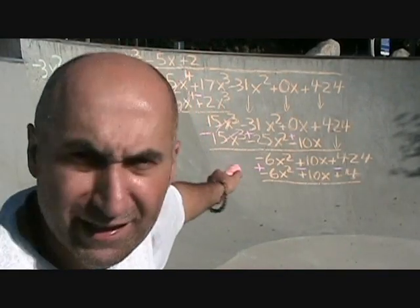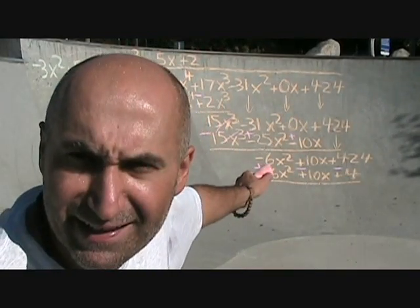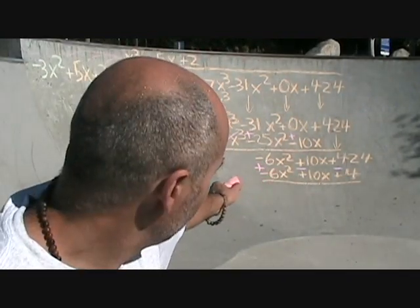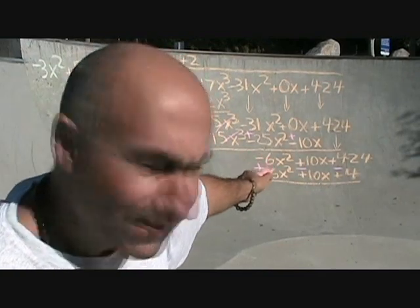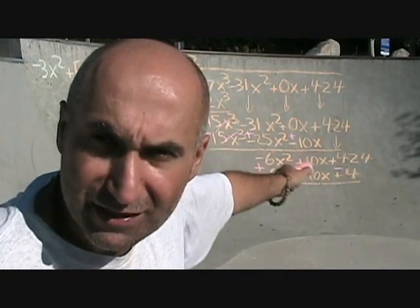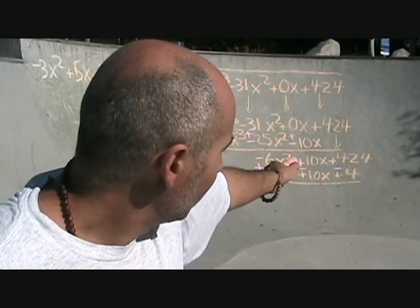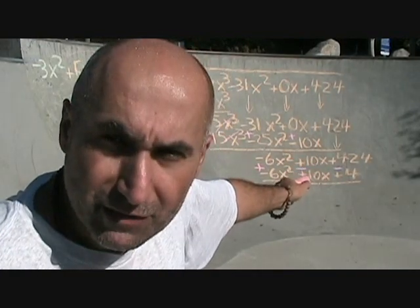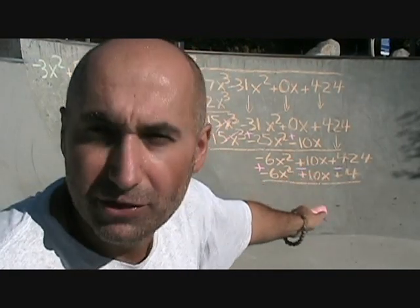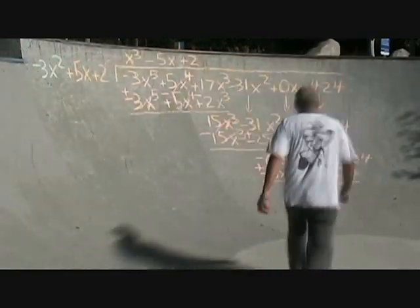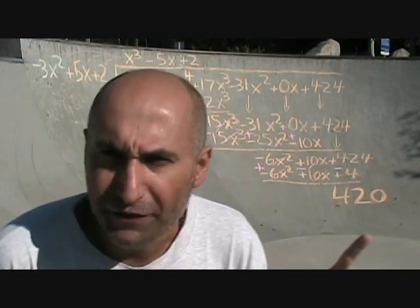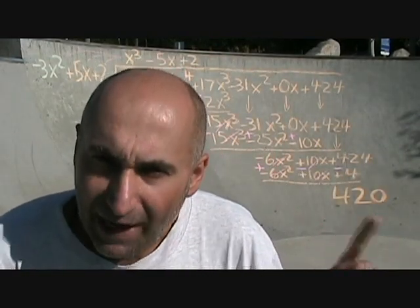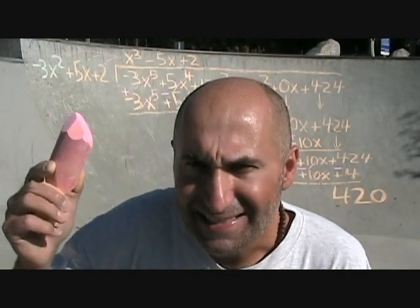Negative 6x² plus 6x² — they cancel each other. 10x minus 10x — those cancel each other as well. And we've got 424 minus 4, which is going to be 420. So we're left with 420.